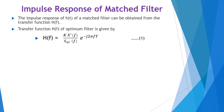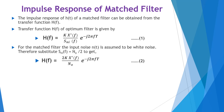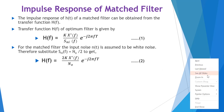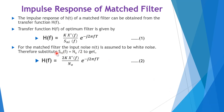For the match filter, the input noise n(t) is assumed to be white noise. Therefore, we can substitute SNI(f) = N0/2. We replace the denominator SNI(f) with N0/2 and rewrite the equation for the transfer function H(f) of the filter.